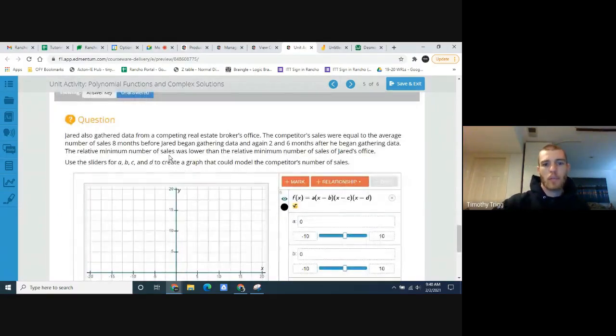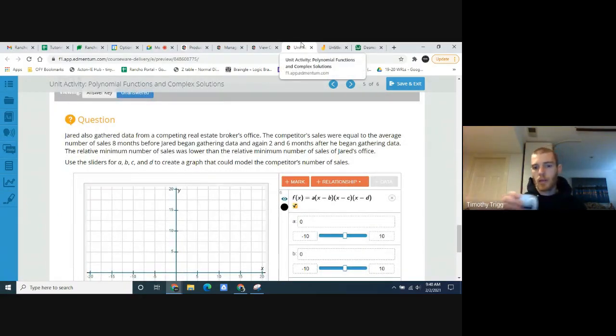Okay, Jared is also gathering data from the competing real estate broker's office. The competitor's sales were equal to the average number of sales eight months before Jared began gathering data, and again two and six months after he began gathering data. The relative minimum number of sales was lower than the relative minimum number of sales for Jared's office.